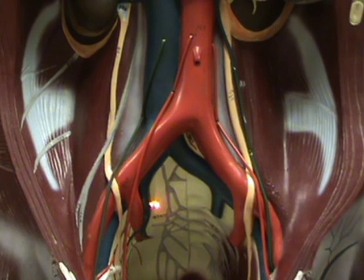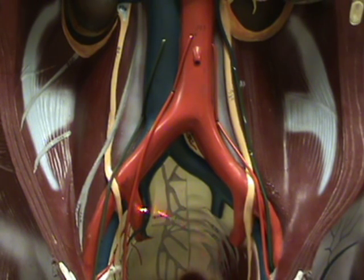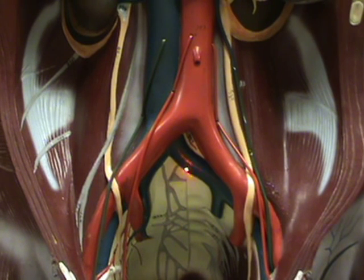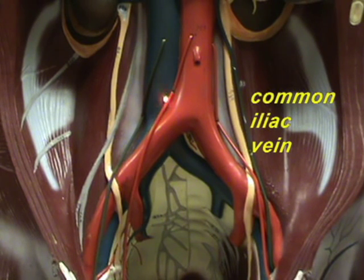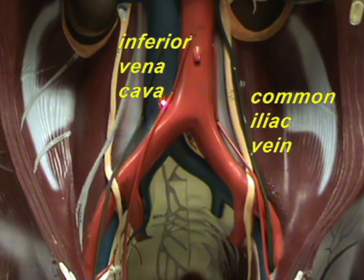The external and internal iliac veins will fuse and become the common iliac vein, and then drain into the inferior vena cava.